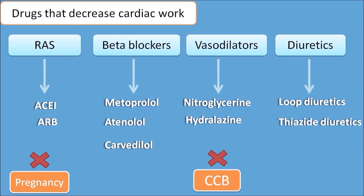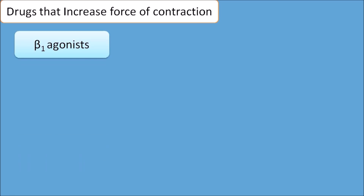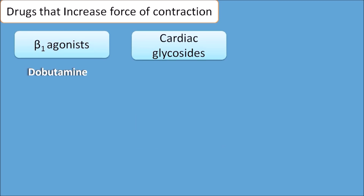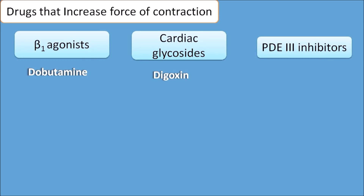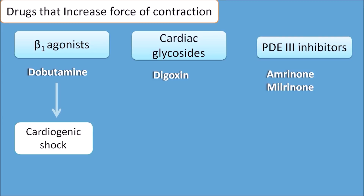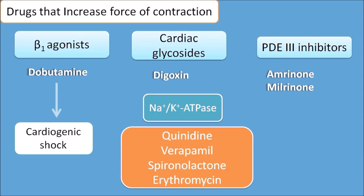For increasing the force of contraction, inotropic drugs are used: beta-1 agonists like dobutamine, cardiac glycosides like digoxin, and PDE3 inhibitors like amrinone and milrinone. Dobutamine is also used in cardiogenic shock. Digoxin inhibits the sodium-potassium ATPase pump on the heart, increasing force of contraction, but it has a narrow therapeutic window. It must be used carefully with drugs like quinidine, verapamil, spironolactone, and erythromycin, as all of these increase digoxin toxicity.